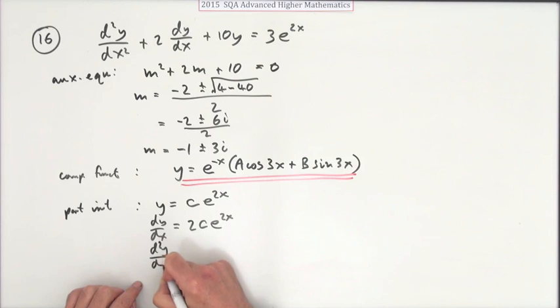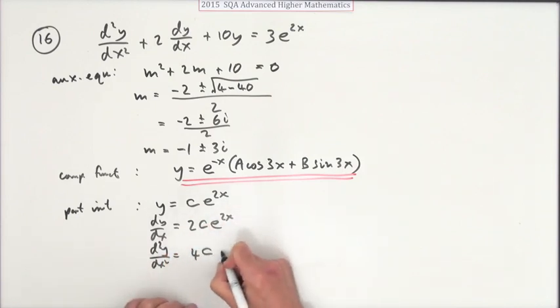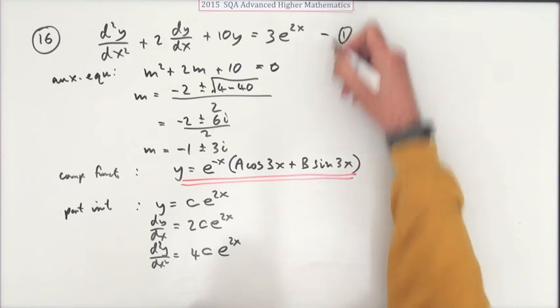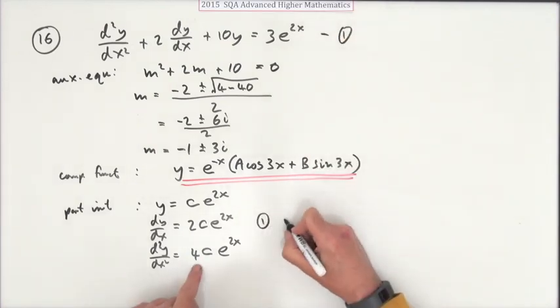And the second derivative is going to be multiplied by 2 again, 4ce^(2x). So feeding that back into that, then feeding it back into equation 1, we'll just call that 1, so into 1's going to give you just one of them.